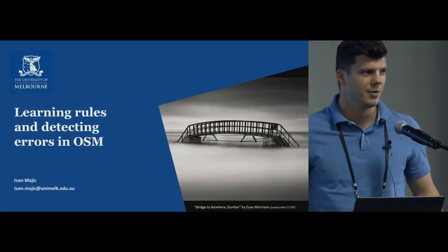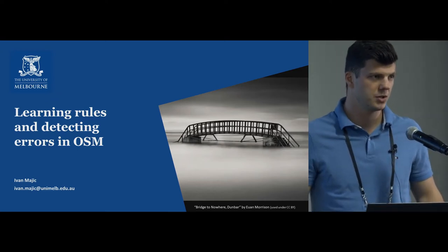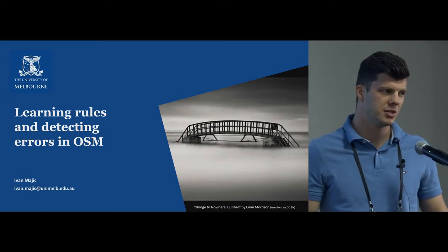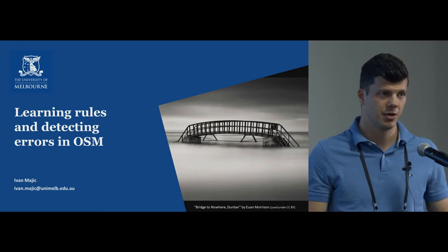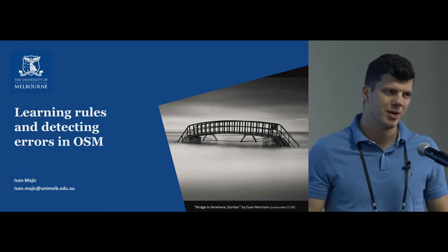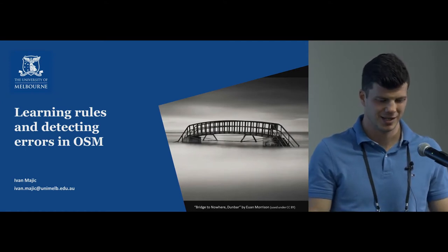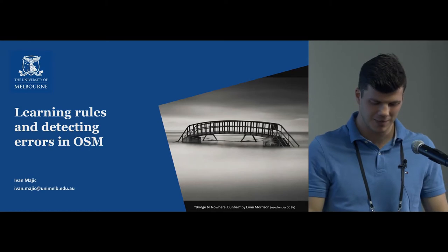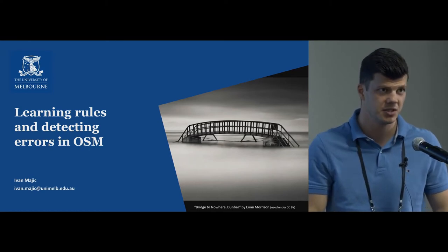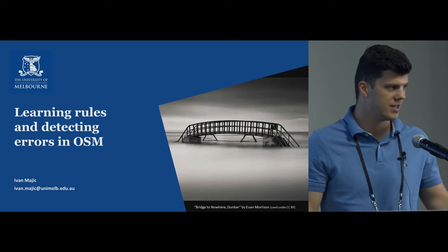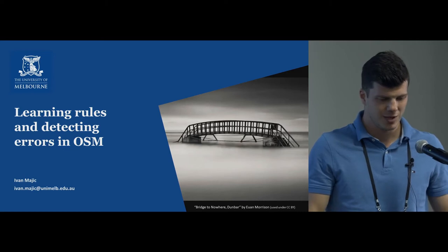Hi everyone, thank you for coming. I'm Ivan, a PhD student in the Geomatics Group at the University of Melbourne — been almost two years now. I'm working on detecting errors in OpenStreetMap. It's a PhD journey so it tends to change direction from time to time, but it's been fun. I'm here to share some of my experiences in this research, and I'm supervised by Martin, who we've all seen two talks ago. Let's get going.